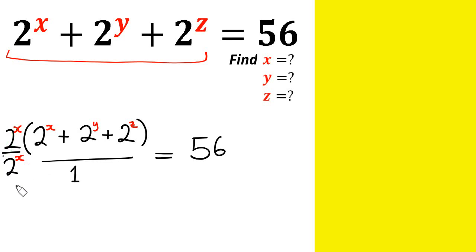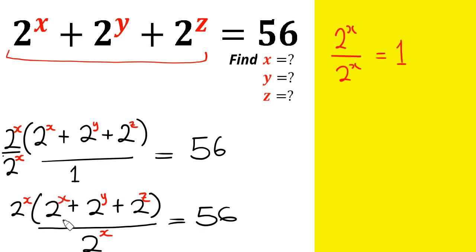The next thing we're going to do is push the denominator — 2 raised by the power of x — inside, so we have 2 raised by the power of x times the bracket (2 raised by power of x plus 2 raised by power of y plus 2 raised by power of z), all over 2 raised by power of x, equals 56. This 2 raised by power of x divides everything: 2^x over 2^x, then 2^y over 2^x, and 2^z over 2^x.